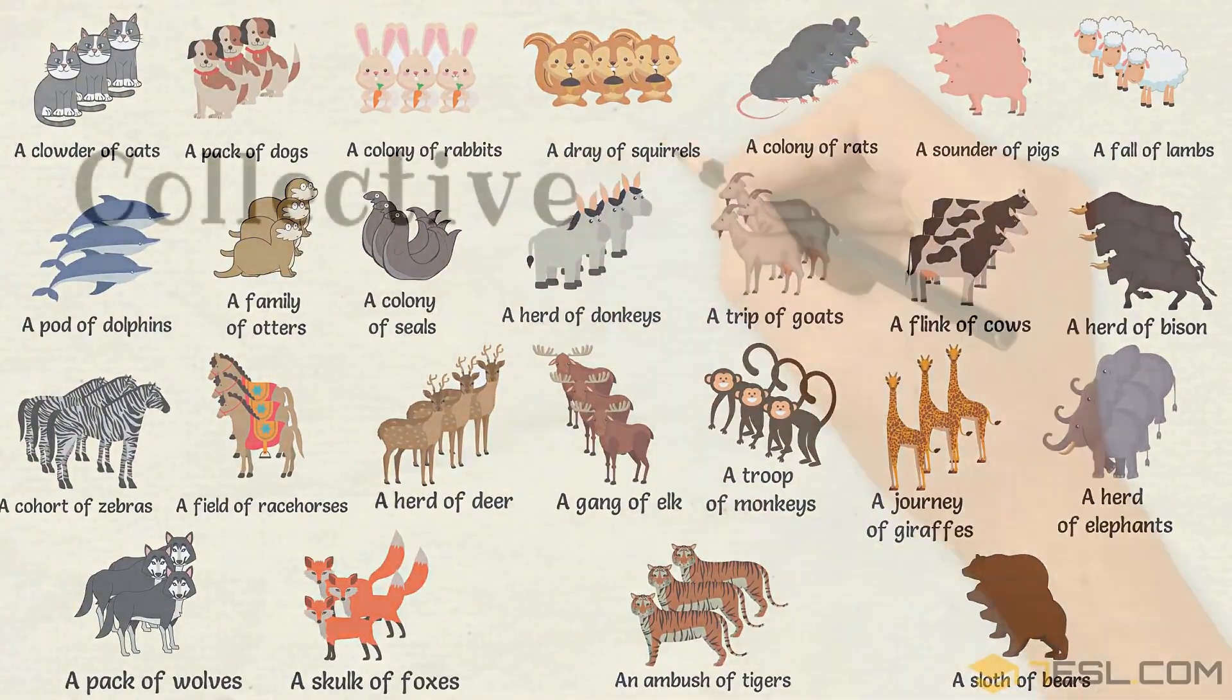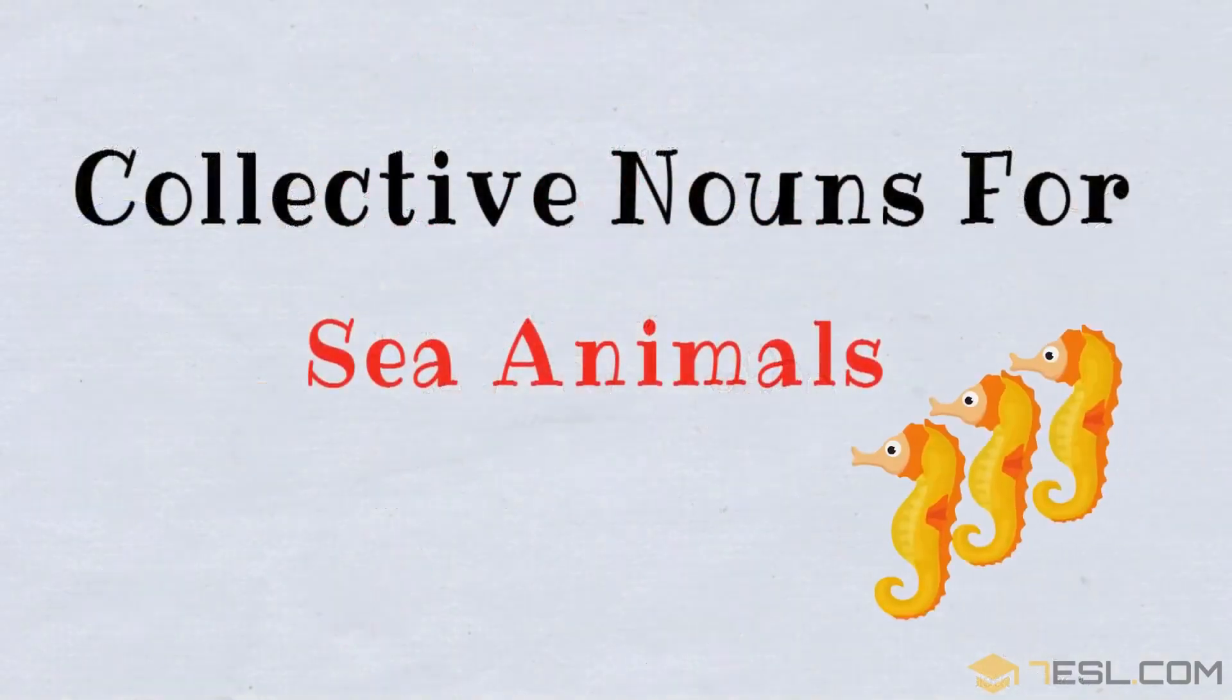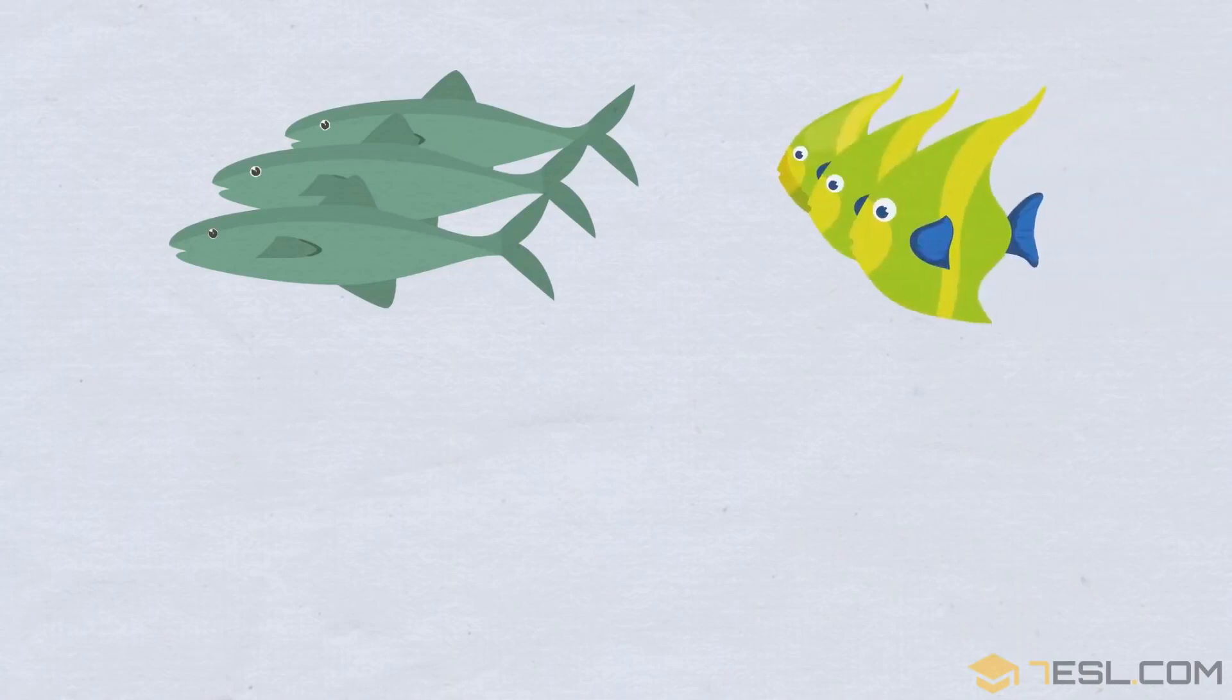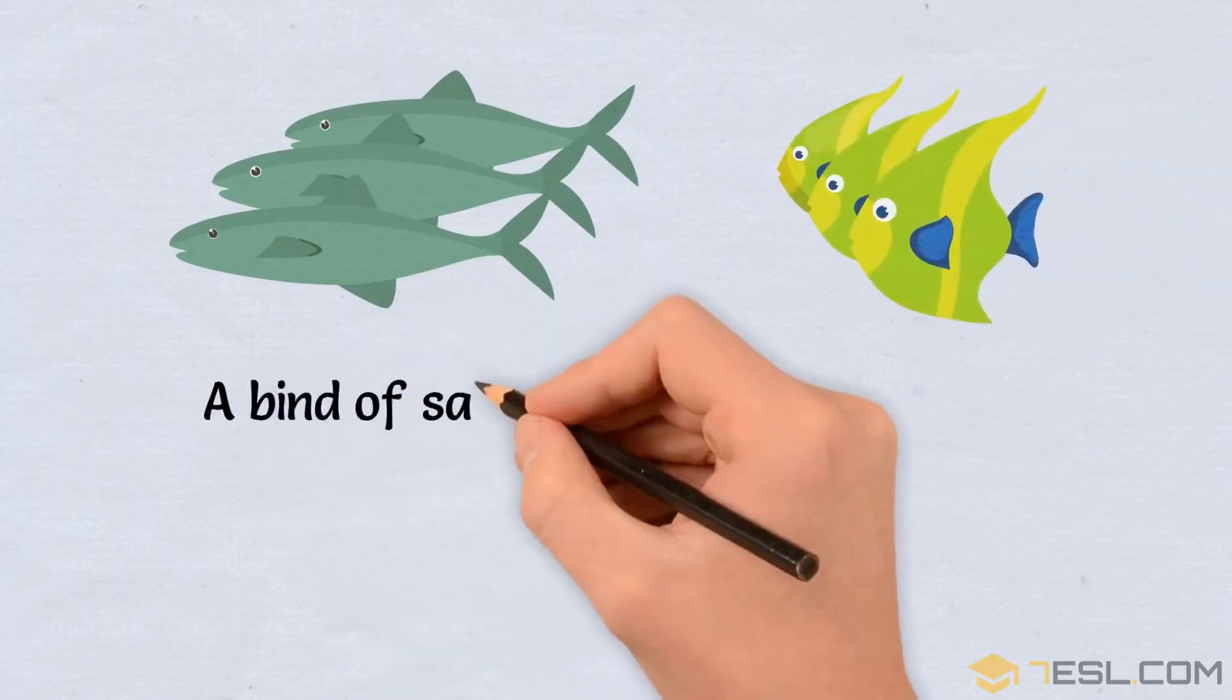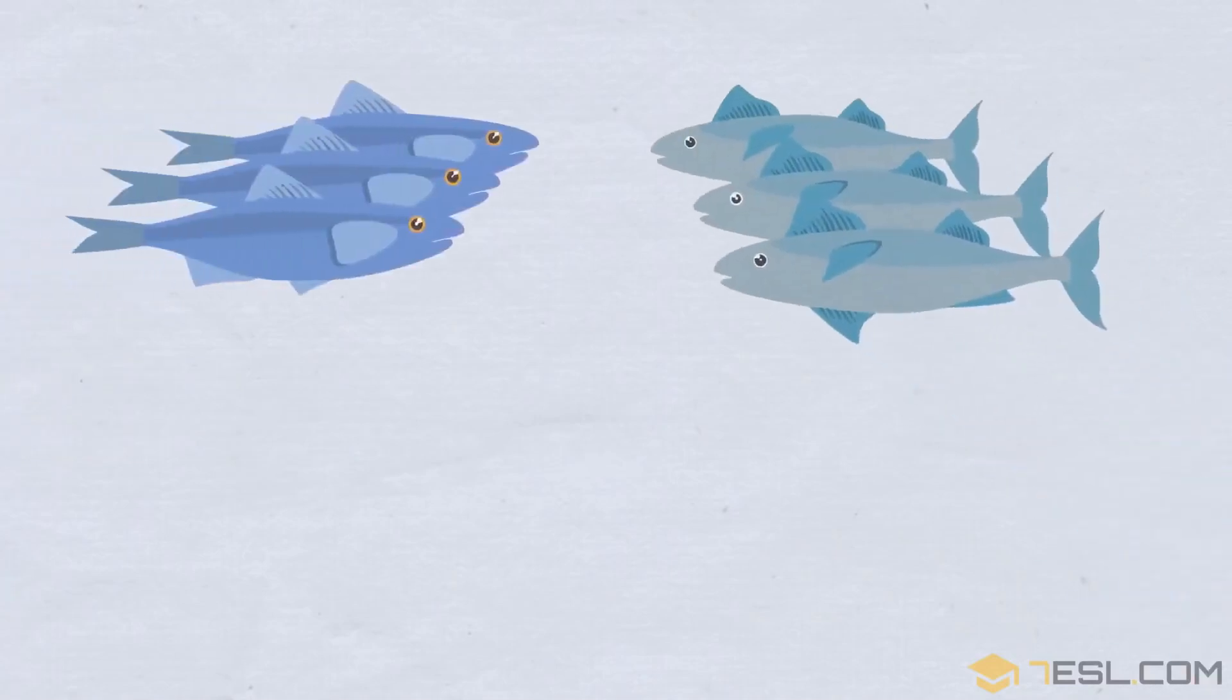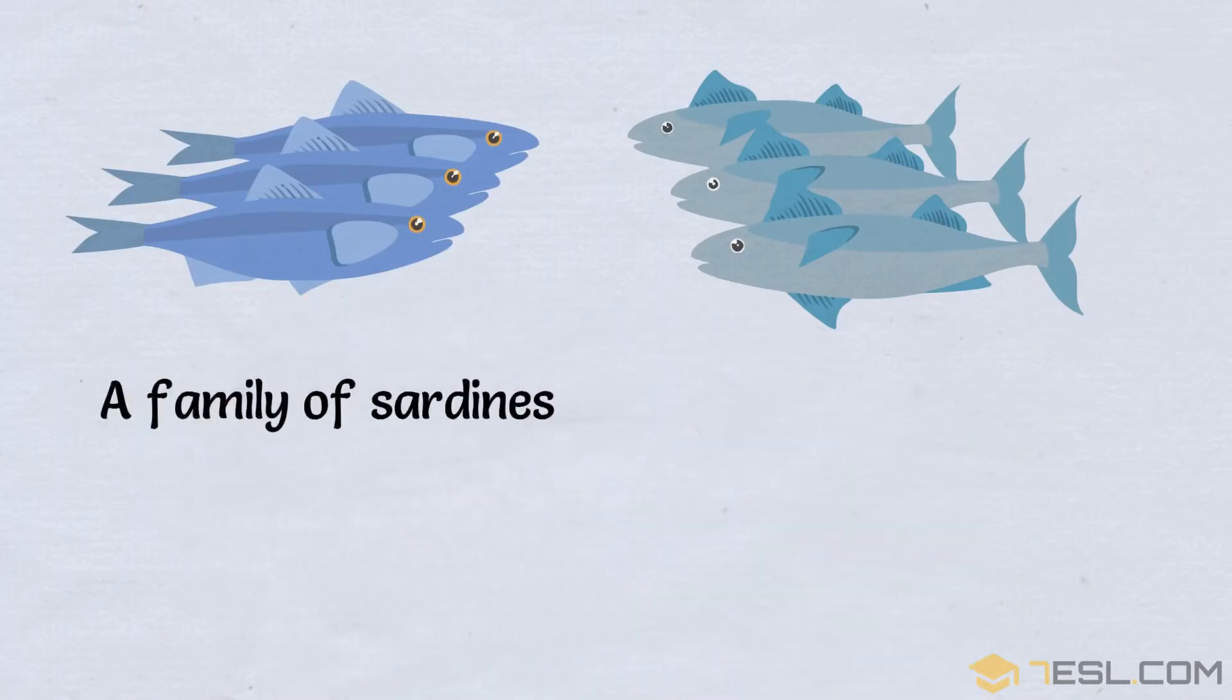Collective nouns for sea animals. A bind of salmon, a company of angelfish, a family of sardines.